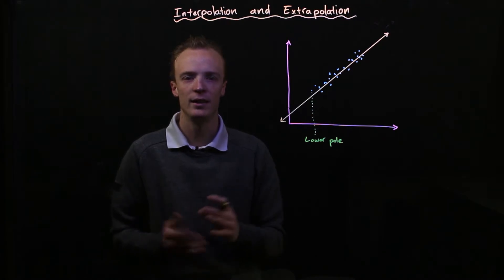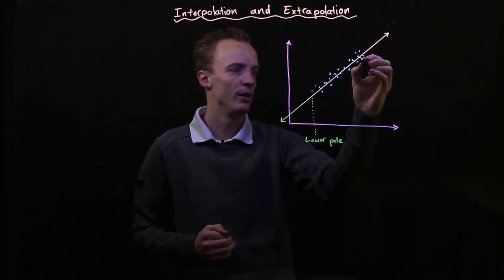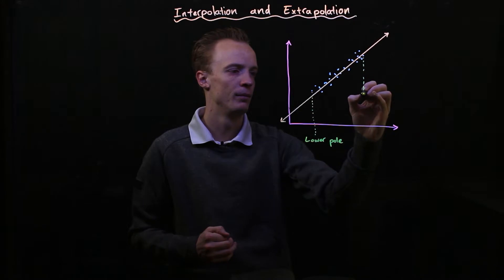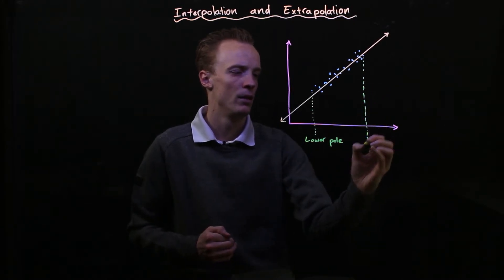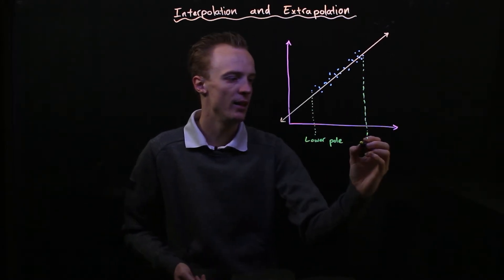The other point that we need is the rightmost point. So this data point here and we call this point in here the upper pole.